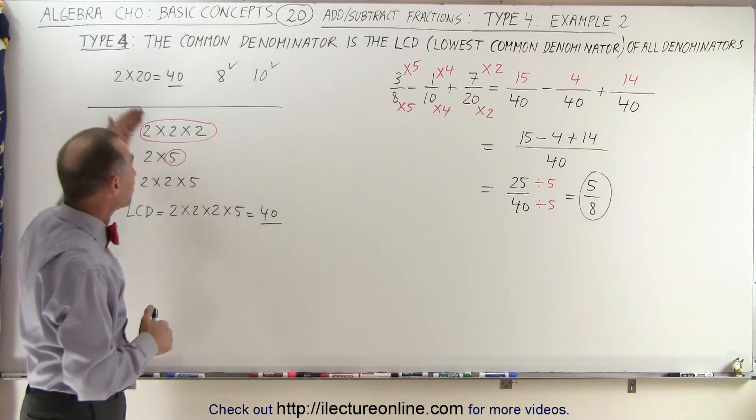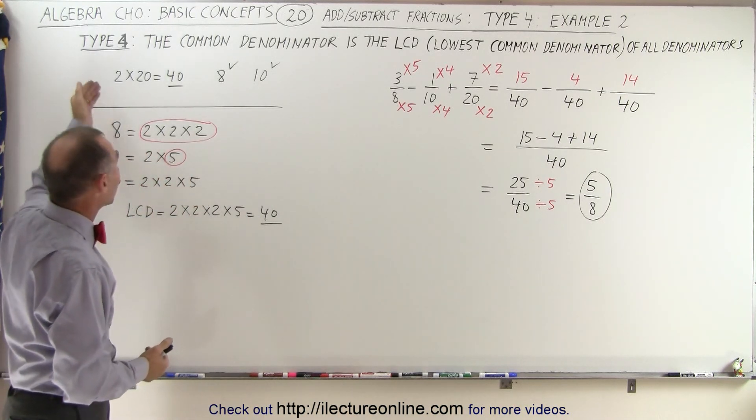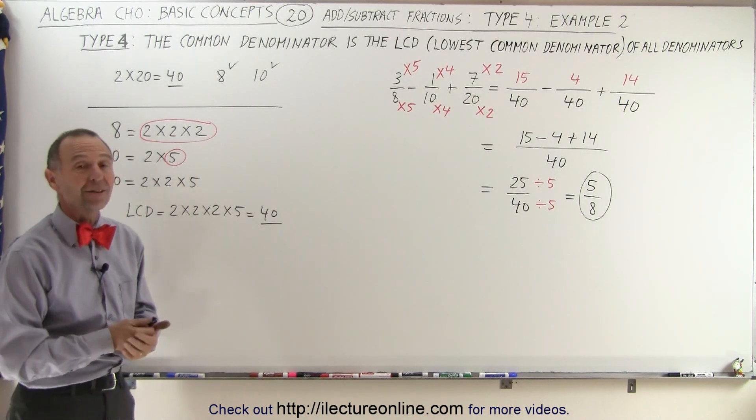Again, notice we have two methods to find the lowest common denominator. In this case, method 1 looked like it was definitely the fastest way to do it, and that's how it's done.